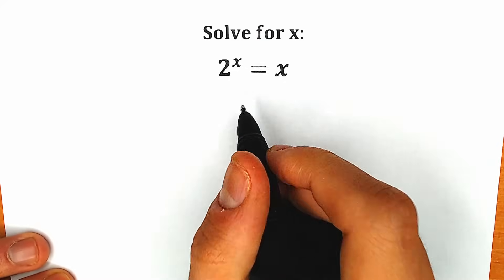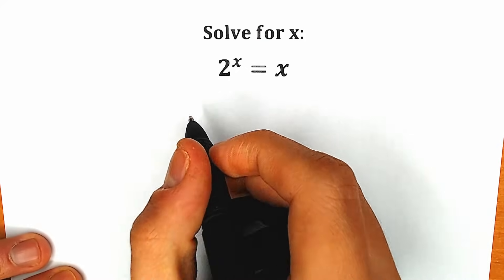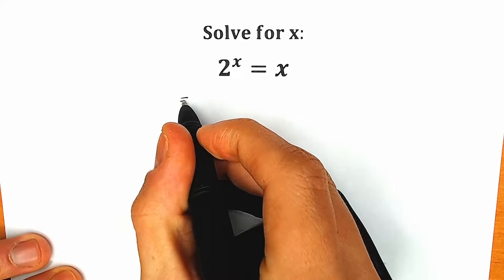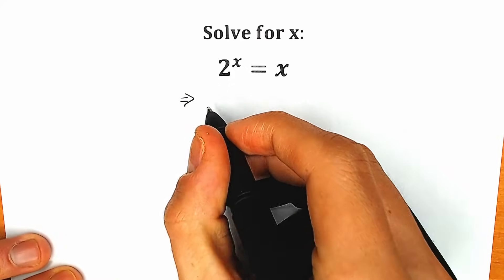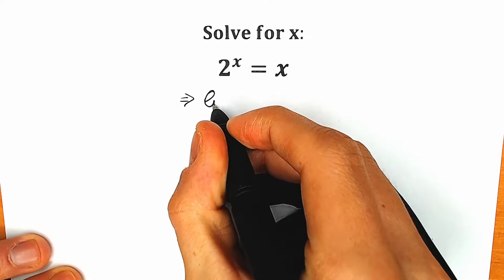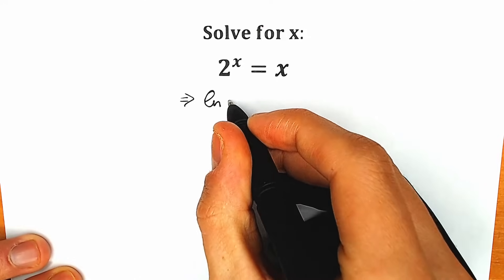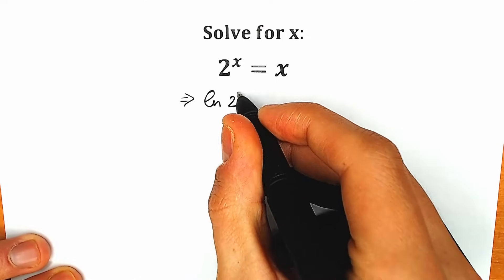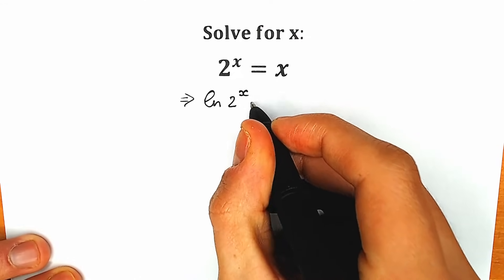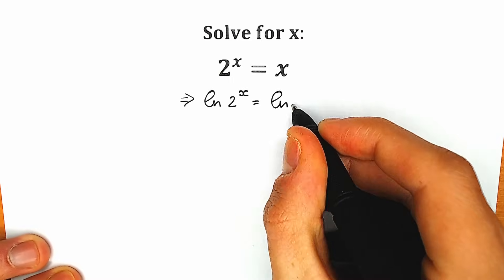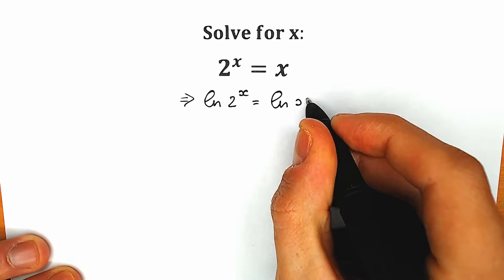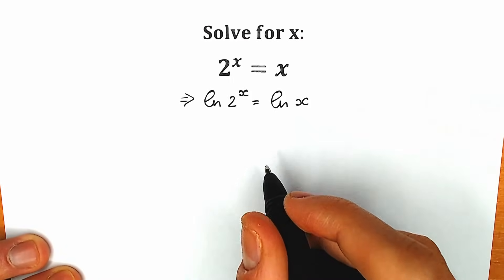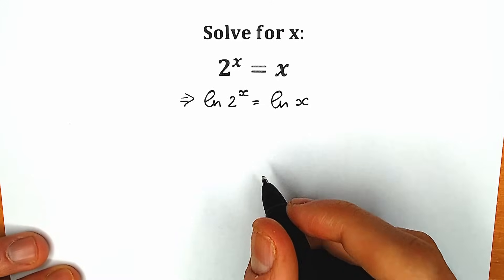First of all, let's apply a natural log on both sides. So we have natural log of 2 to the x on our left side equal to natural log of x on our right side. This is our first step.